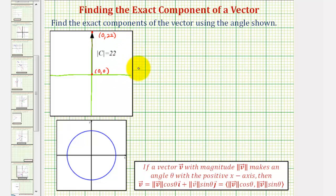This is all we need to find the component form of vector C. Vector C in component form would have an x-component of zero and a y-component of 22.